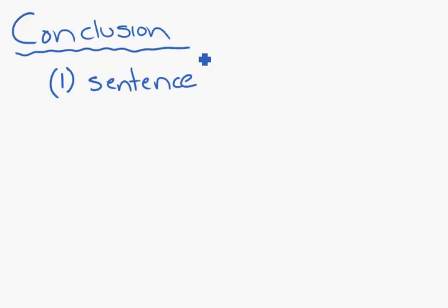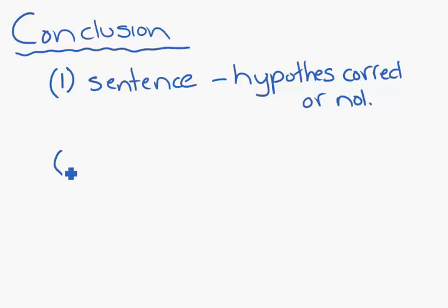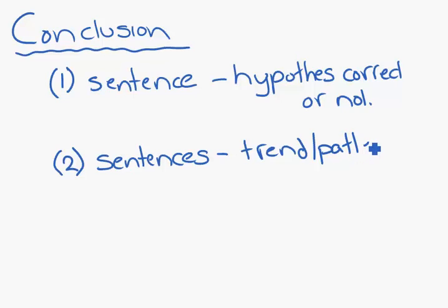Firstly, you need a sentence saying was your hypothesis correct or not. You then need a sentence outlining what did you actually find, what is the trend or the pattern? This may be more than one sentence. You should not be restating your numbers. We can see those in a data table. You might have something simple like as it got hotter, there was more enzyme activity up to 40 degrees and then it dropped again. That would be it. Explain what happened.